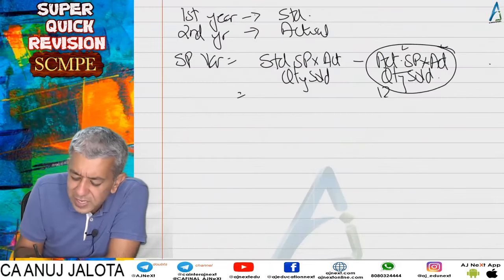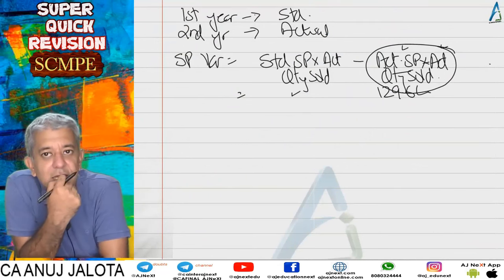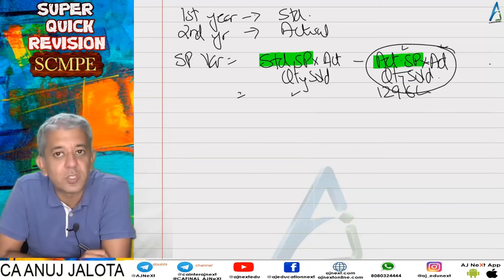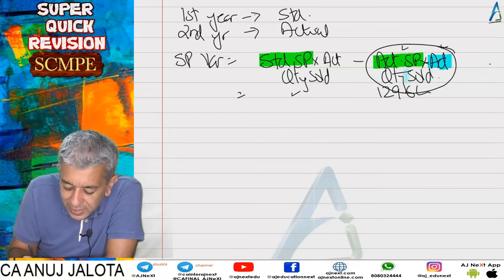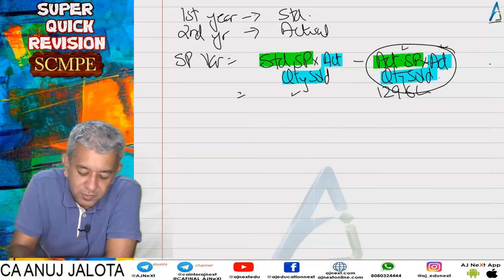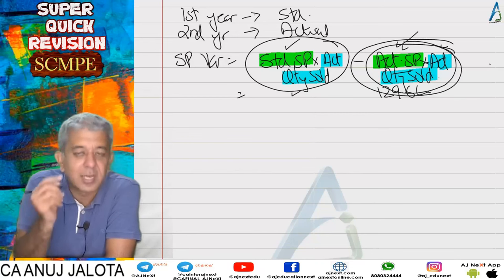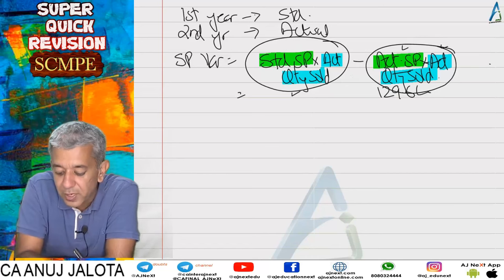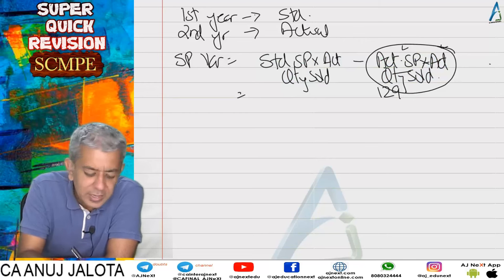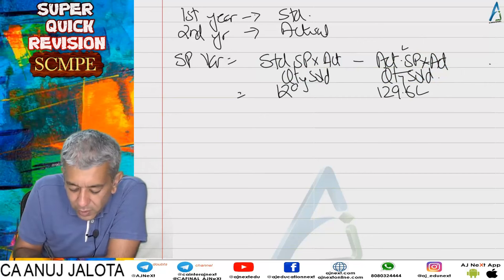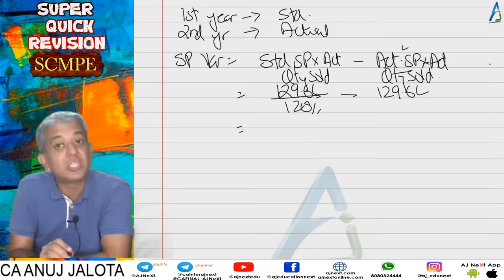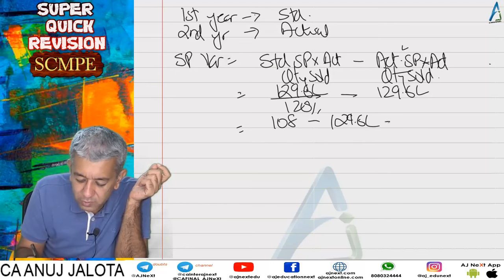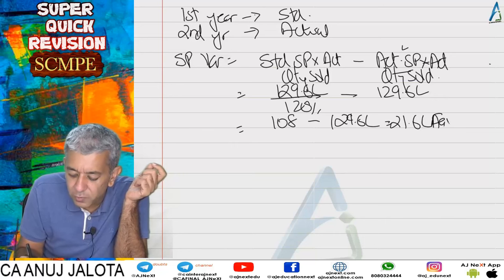So selling price variance = 108 lakhs minus 129.6 lakhs = 21.6 lakhs favorable (actual was higher). To complete the RICO statement, we solve it under both absorption and marginal costing, though for exams marginal costing is preferred. For profit volume (contribution volume) variance, we need quantity change. Sales of year 1 was 120 lakhs; selling price increased by 120% and volume changed by X%. Solving: 120 × 1.20 × X = 129.6, giving X = 90%.